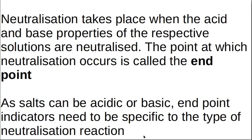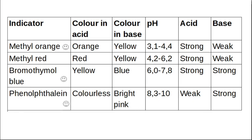A strong acid and a strong base use one indicator; a strong acid and a weak base use another. You need to know these indicators for the exam. The three in the exam guidelines are methyl orange, bromothymol blue, and phenolphthalein. Methyl orange is orange in acid and yellow in base, and it changes color between pH 3.1 and 4.4. Because it changes at an acidic pH, you use it for acidic salts — when you titrate a strong acid with a weak base.